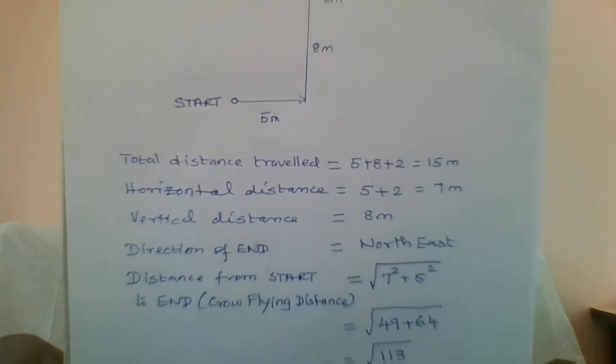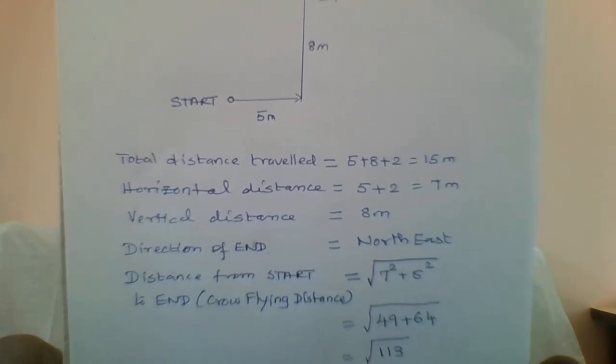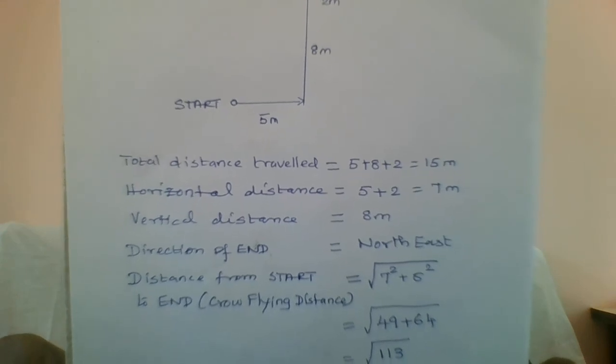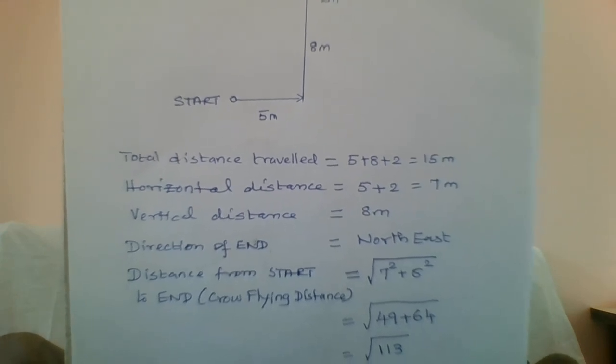This is also called as a crow flying distance. If you allow a crow to fly from the start point to the end point, it will go directly. So that is why it is called a crow flying distance.